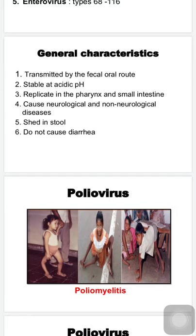The general characteristics of enteroviruses: they are all transmitted by the feco-oral route, that is by ingestion of contaminated food and water. They are very stable at acidic pH in the stomach, so they do not die there. They replicate in the pharynx as well as in the small intestine and cause a variety of neurological and non-neurological diseases, including paralysis and conjunctivitis. When multiplying in the alimentary tract they are excreted in feces but do not cause diarrhea.